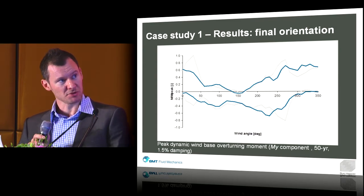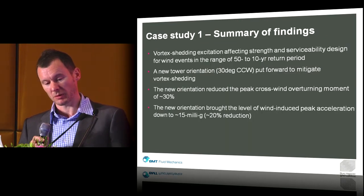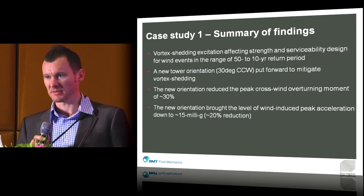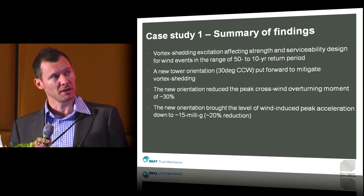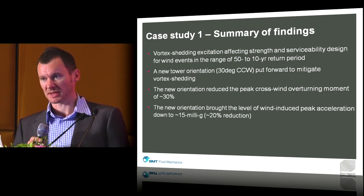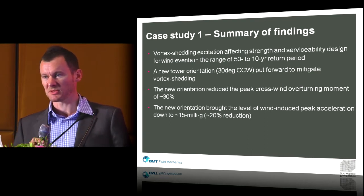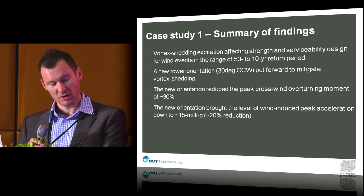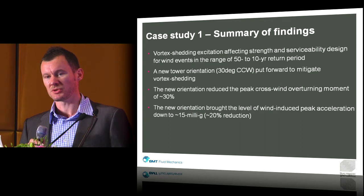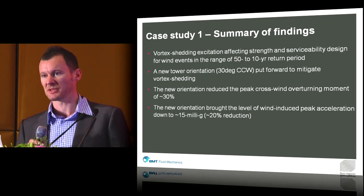As a result, we were reducing overturning loads by around 30%. At both ultimate limit state and serviceability limit state, the crosswind vortex shedding was causing issues. But with this 30-degree rotation, we determined we could reduce overturning moments by 30% and reduce accelerations by 15% — all quite standard procedure in a wind tunnel. One thing we did pick up on was that with a more interactive approach, there would be further potential for improving the base overturning moments and accelerations further.